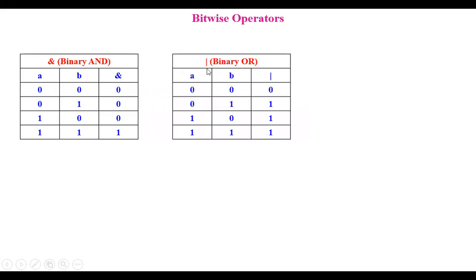Next, the OR operator, again performed on A and B. When A and B are both zero, the result is zero. When A or B has a value — is true — then the result will be true. If either A or B has a value and the other is zero, we get true. Even if both are true, we get true.